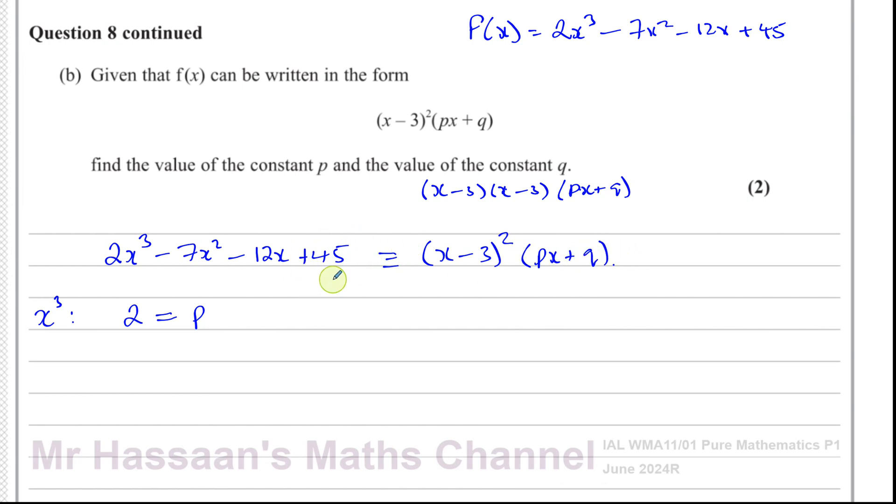If you want to find out what q is, we can concentrate on the constant term. Look at the constant term on both sides. On this side we have 45. On this side, if you think about it, you're going to have minus 3 times minus 3, which is minus 3 squared, which is going to give you 9 times q. That's what's going to give you the 45. When you multiply minus 3 with minus 3 with plus q, that's going to give you the 45.